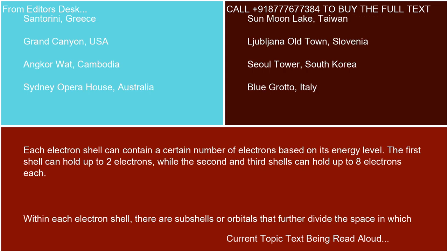Each electron shell can contain a certain number of electrons based on its energy level. The first shell can hold up to two electrons, while the second and third shells can hold up to eight electrons each.